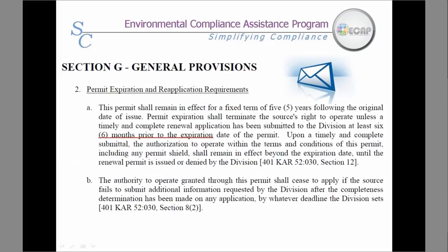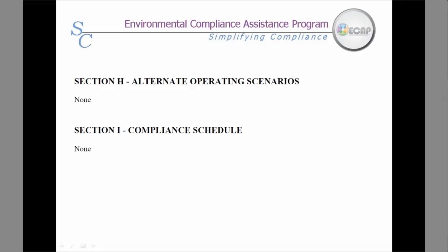Section G with the general provisions is full of information. One item, as mentioned earlier, is that six months prior to the expiration date of your permit, a renewal must be submitted. Sections H and I — your permit may or may not have information listed there if your facility operations are not subject to either.